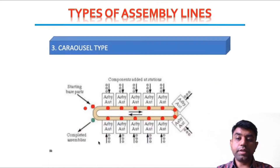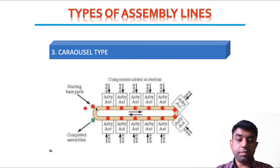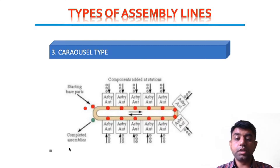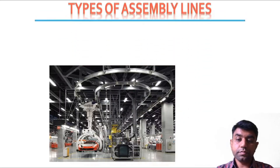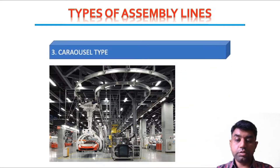The third arrangement is the carousel type, which is a combination of the previous two. Automated assembly units are arranged in a carousel or loop form. The starting part comes in from one end, is assembled at different workstations, and exits as a complete assembly. The automobile industry also uses this carousel type of assembly arrangement.